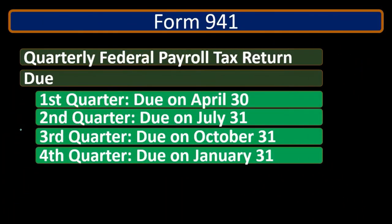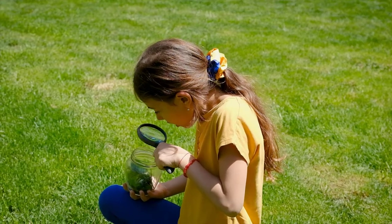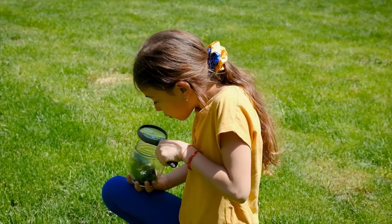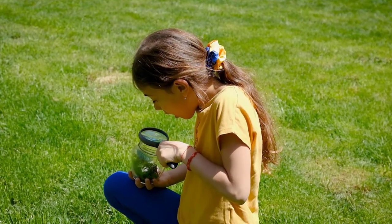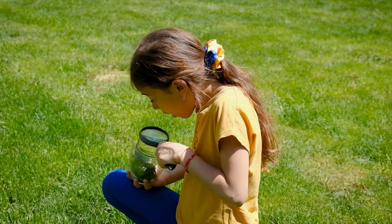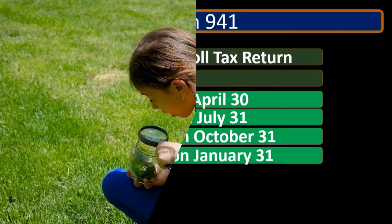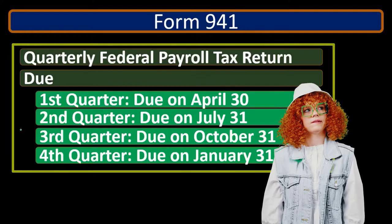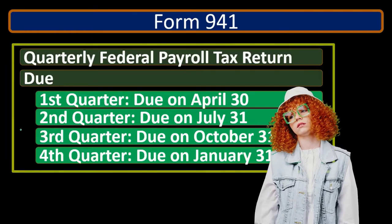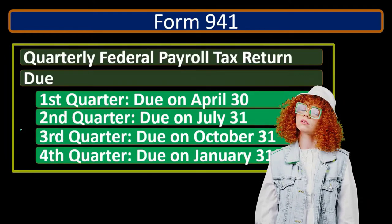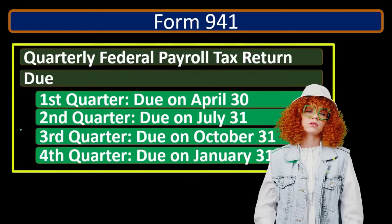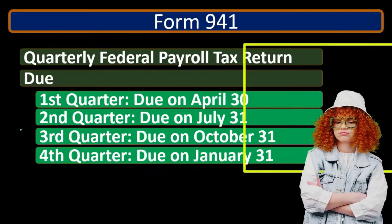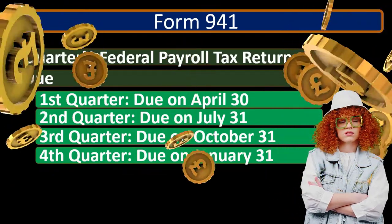When you first start looking at this, it can seem a little confusing. Sometimes people think there are four months in a quarter. But remember, we're taking four quarters of a 12-month year — 12 divided by four is three. We've got three-month quarters whenever we break the year up.